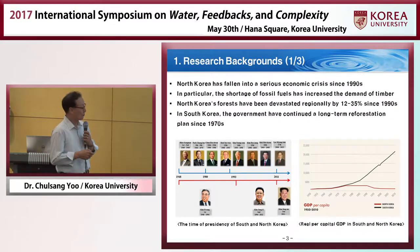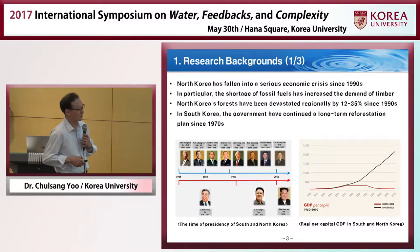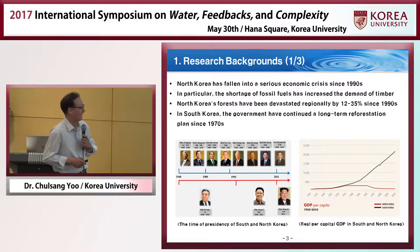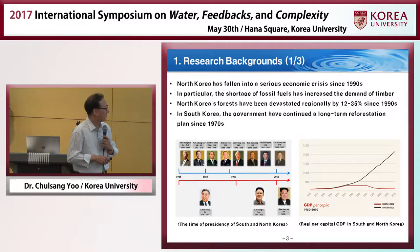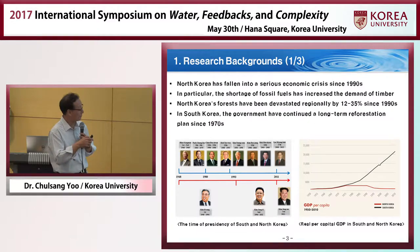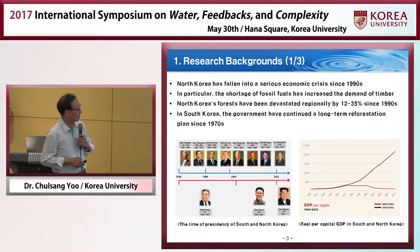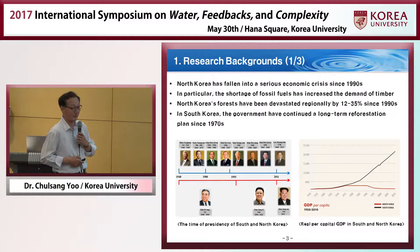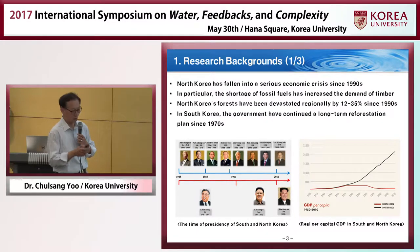I think most of you know who they are. They are presidents in South Korea, and they are rulers in North Korea. He ruled North Korea for more than 30 years, and he died around this time period. His son, Kim Jong-il, also ruled North Korea for about 20 years. Now his son, Kim Jong-un, rules North Korea.